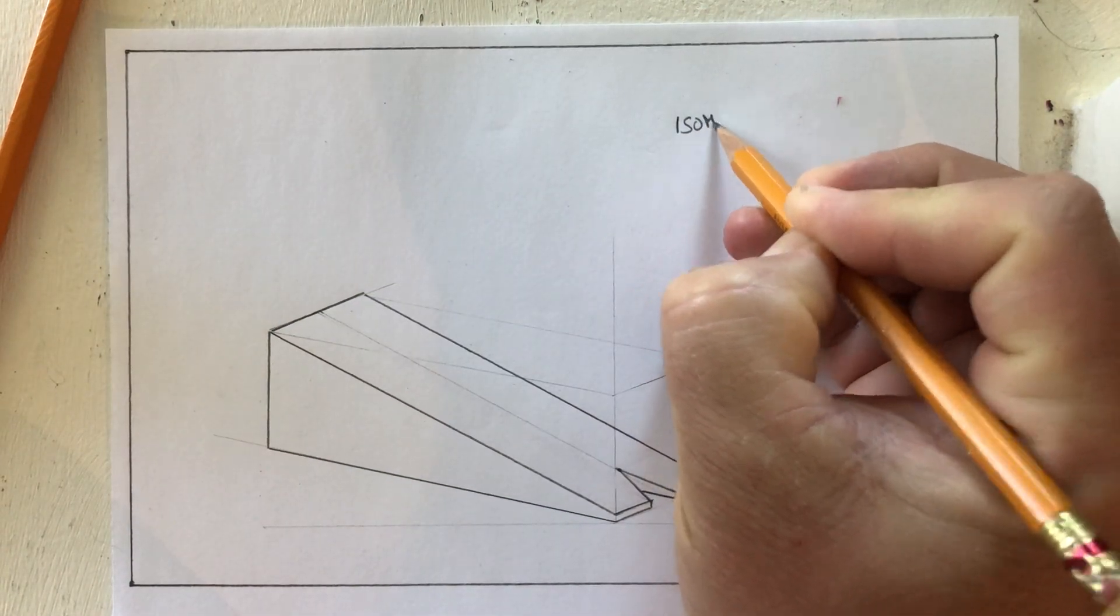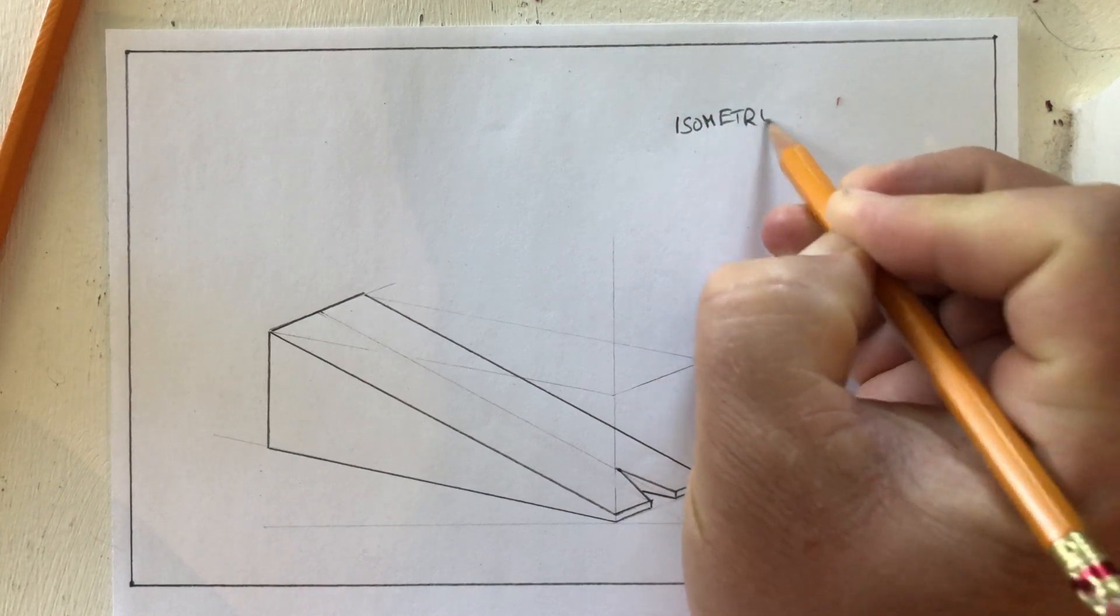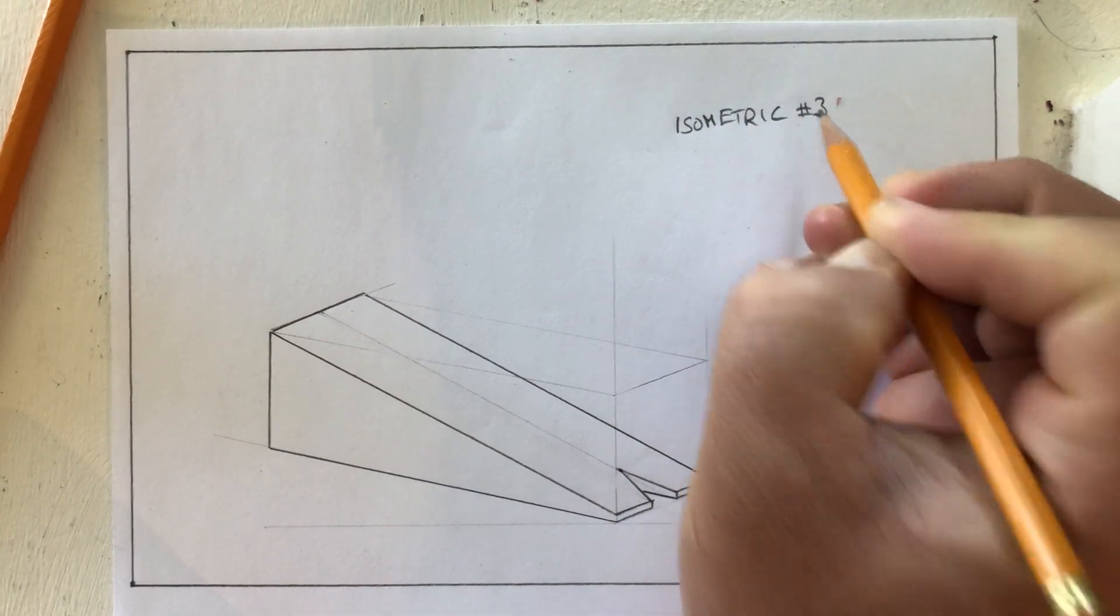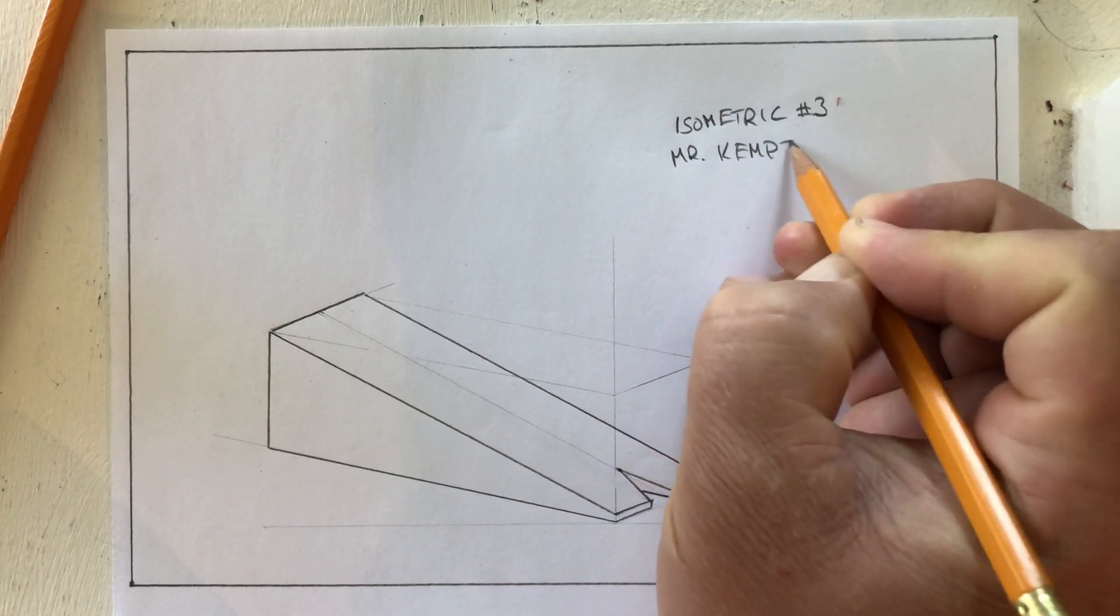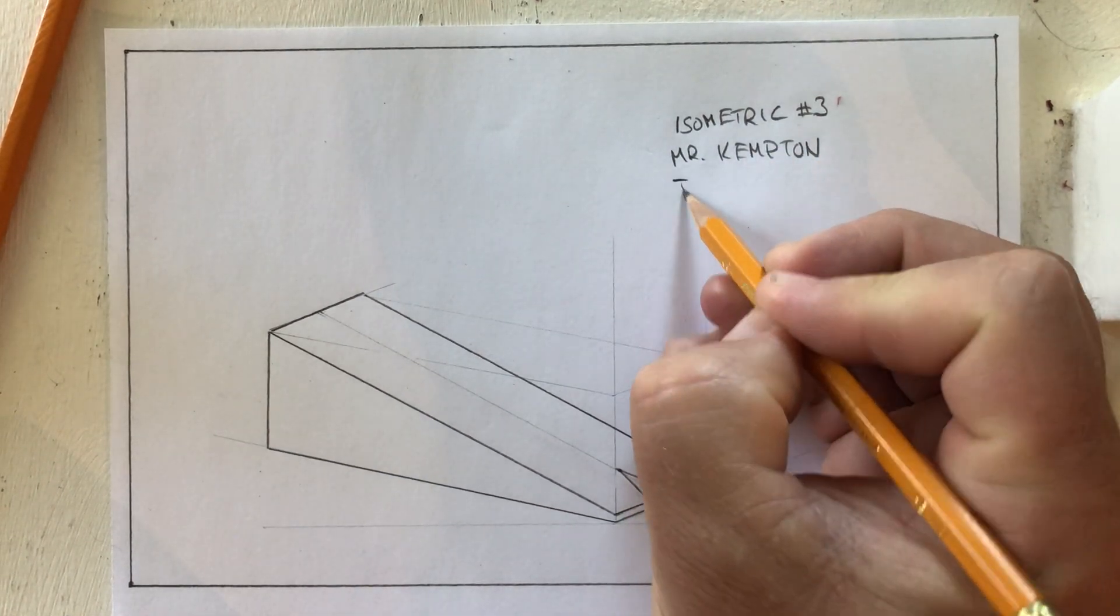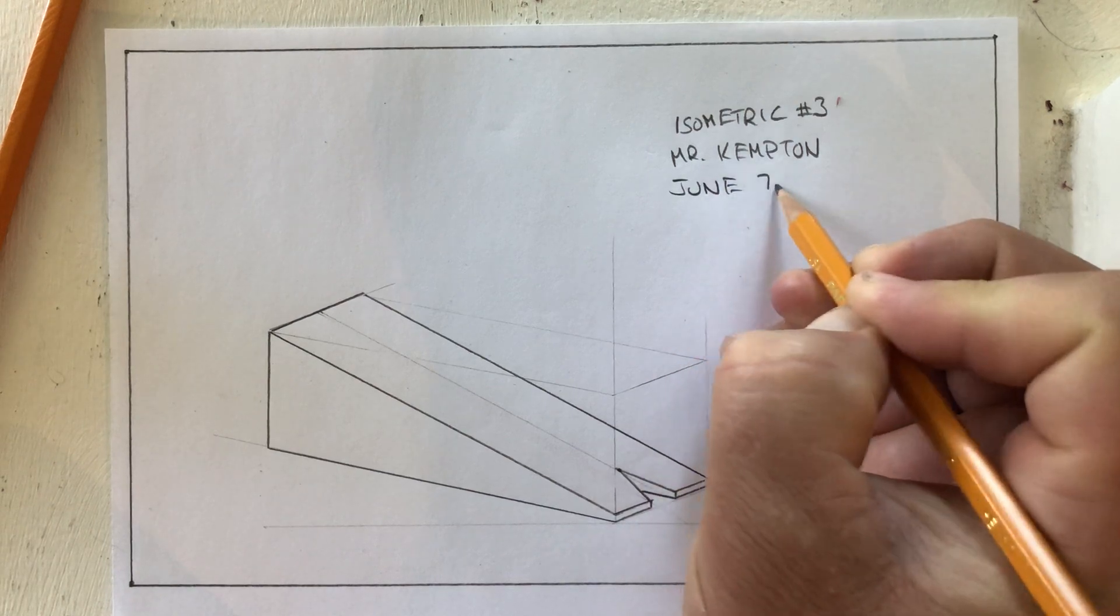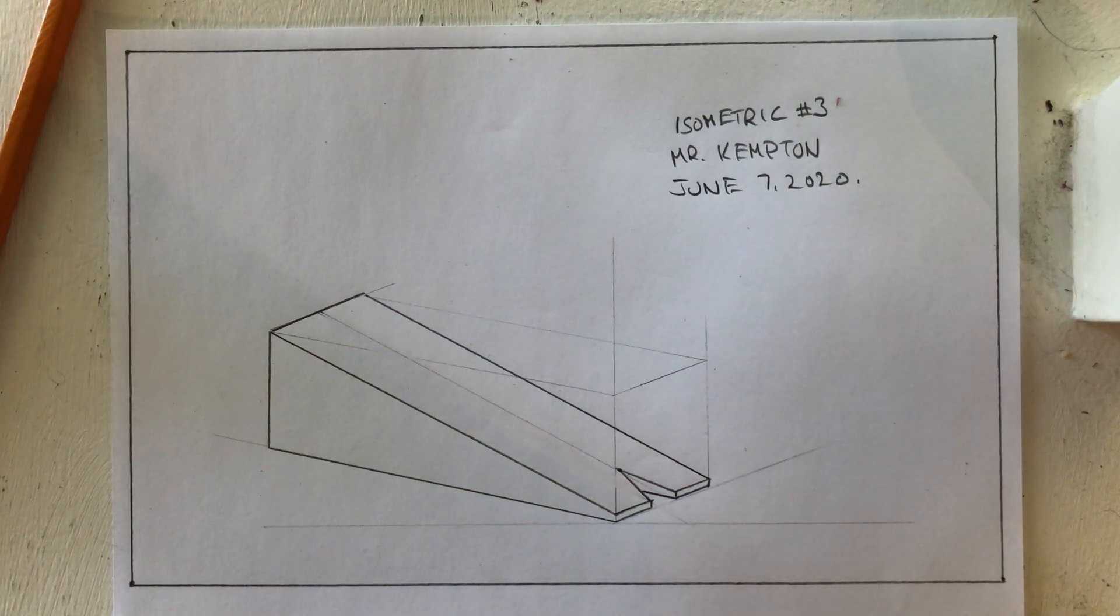I will go back to my title block. Isometric number three by Mr. Kempton. And today is still June 7, 2020.